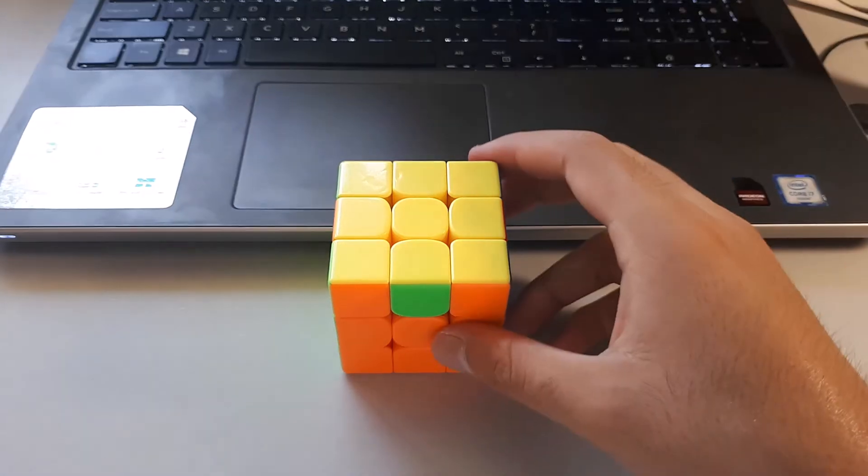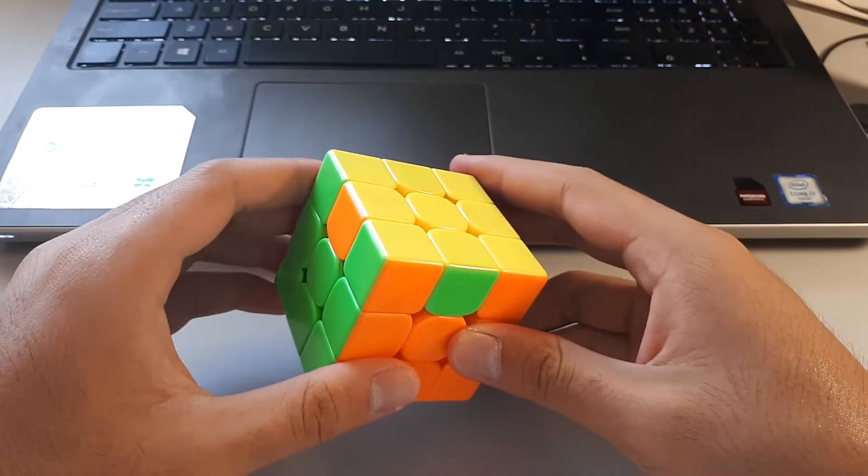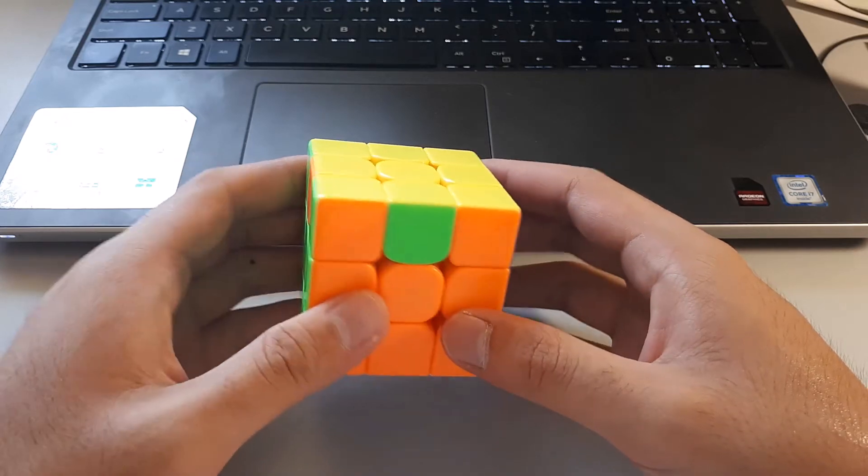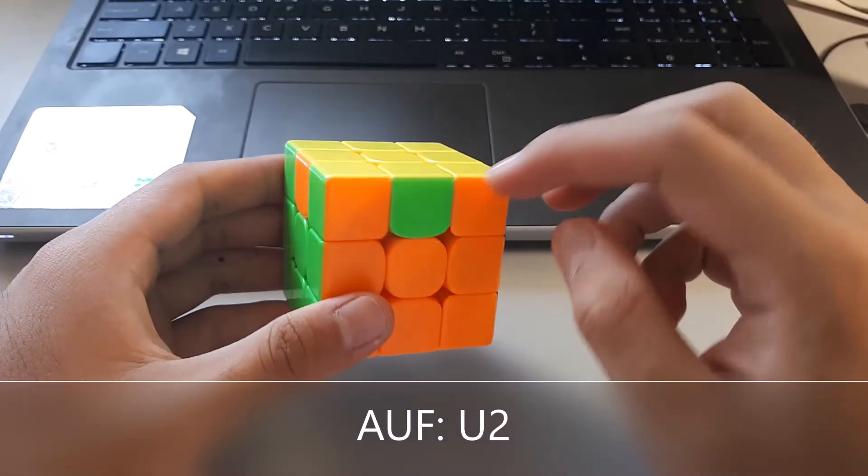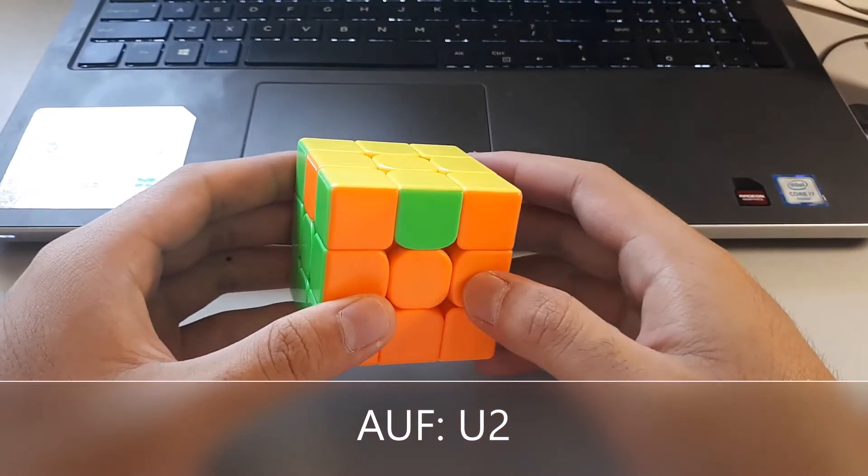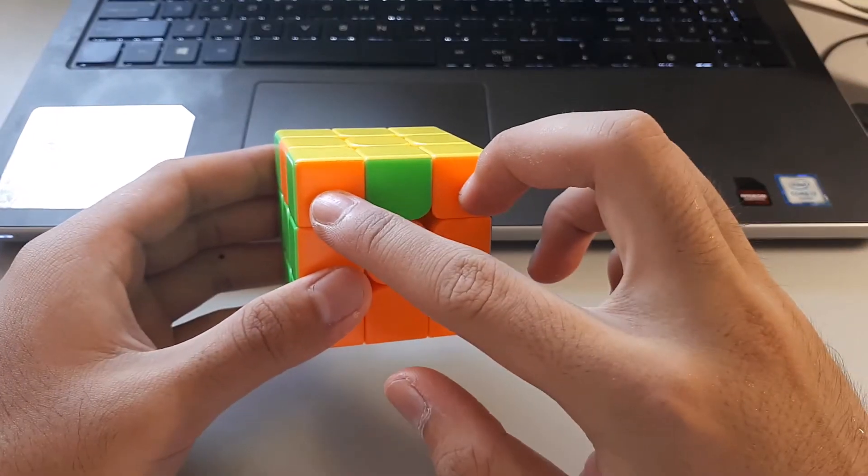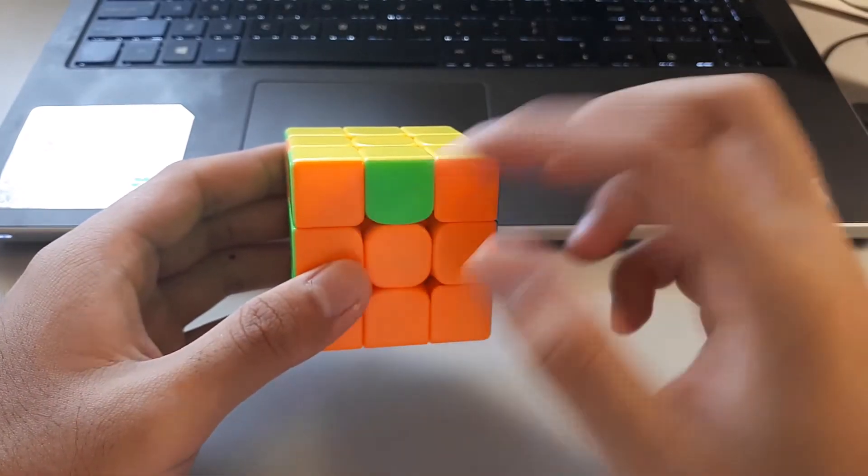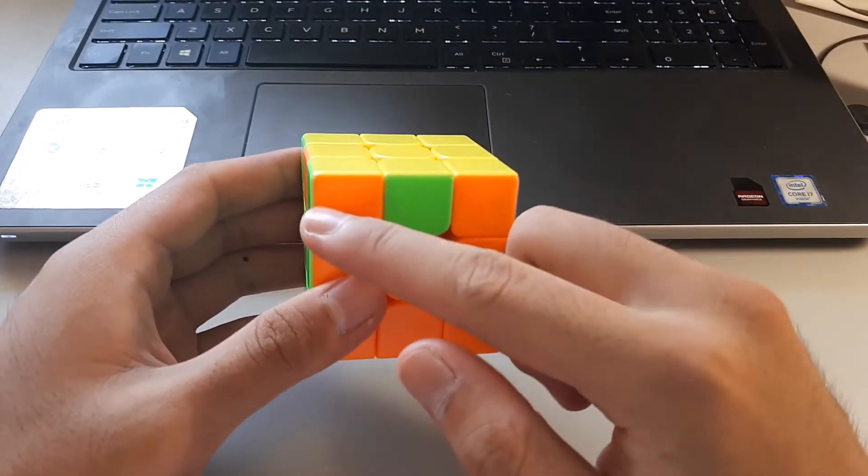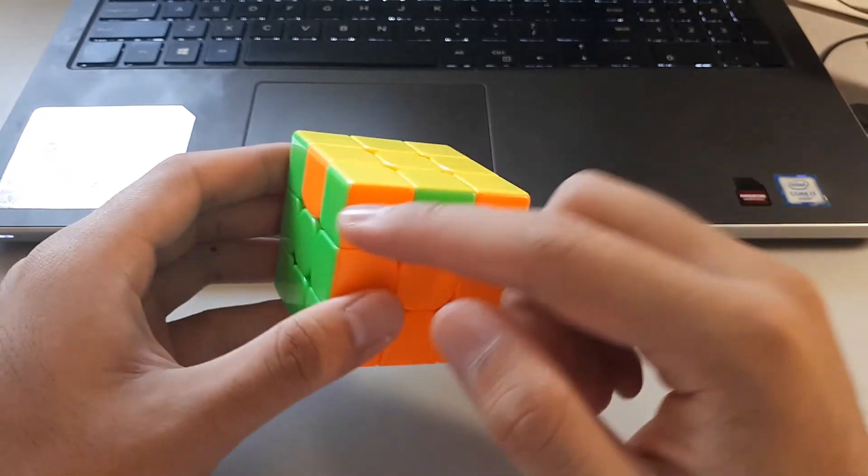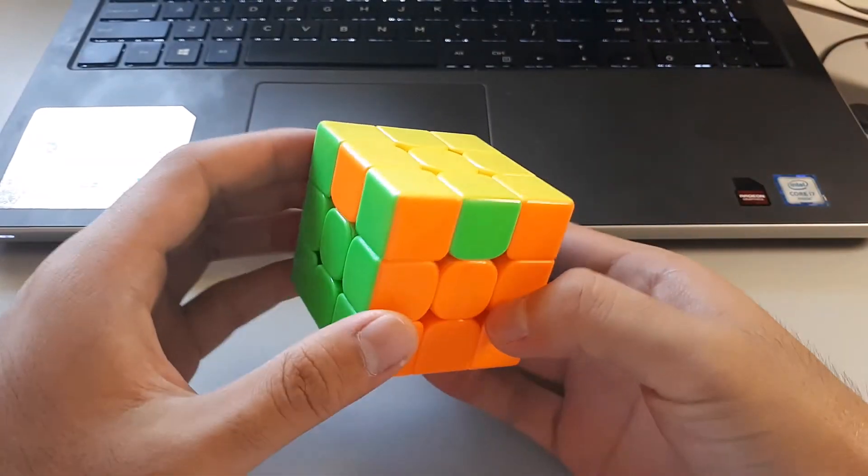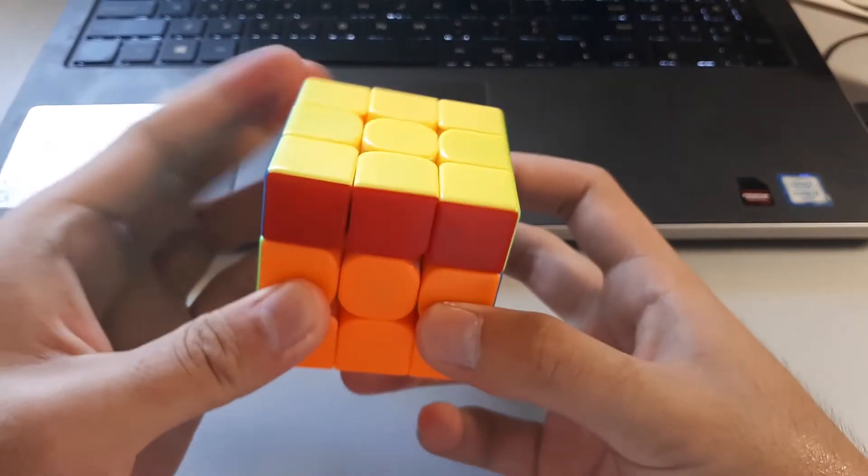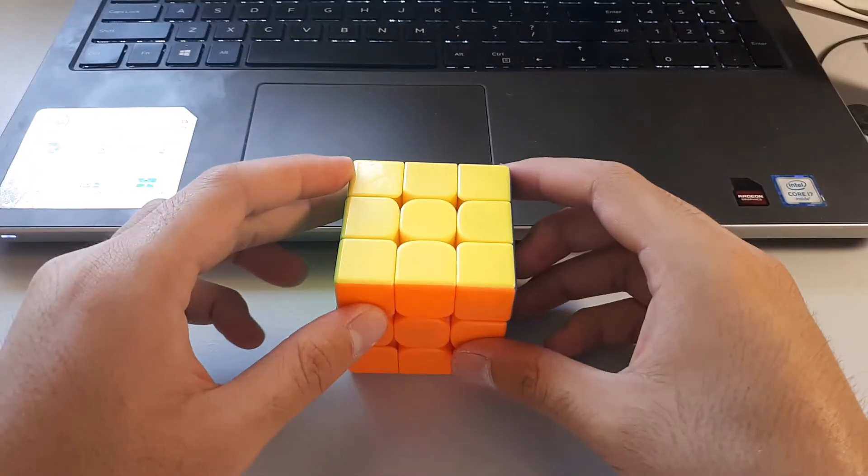Finally, onto the AUFs. If you use the first algorithm I've shown, which is the one that starts off with an M2U prime, then the AUF is a U2. This means that the orange headlights, for this example, are at the front, which actually means that after the algorithm, red will be at the front. So we'll have to do a U2 after the algorithm, like this, so a U2 at the end.